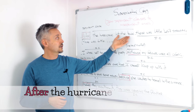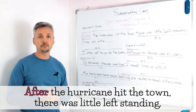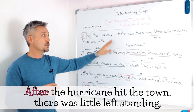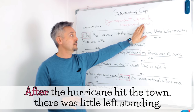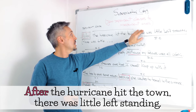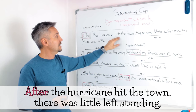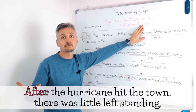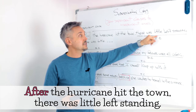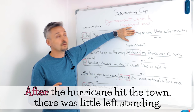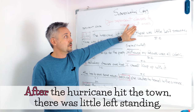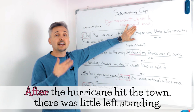After the hurricane hit the town, there was little left standing. 'After the hurricane hit the town' is a dependent clause, so it cannot mean anything if you leave it without the other part of the sentence. If I said 'after the hurricane hit the town,' it doesn't mean anything — we need something else. Instead, 'there was little left standing' — we can have that sentence alone, we don't need anything else. 'There was little left standing' is an independent clause.